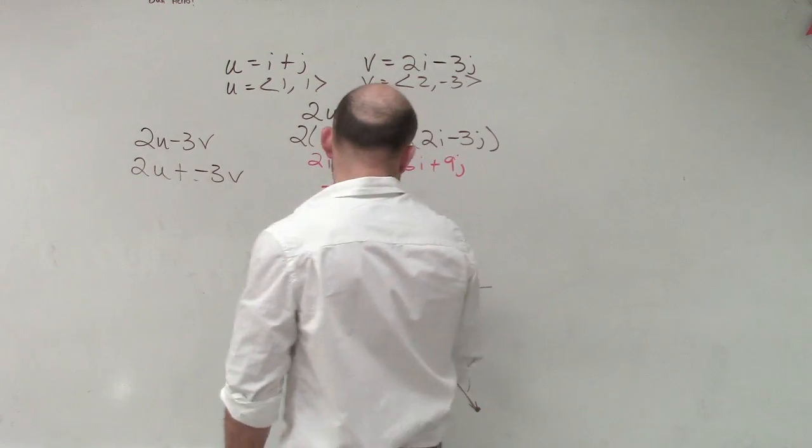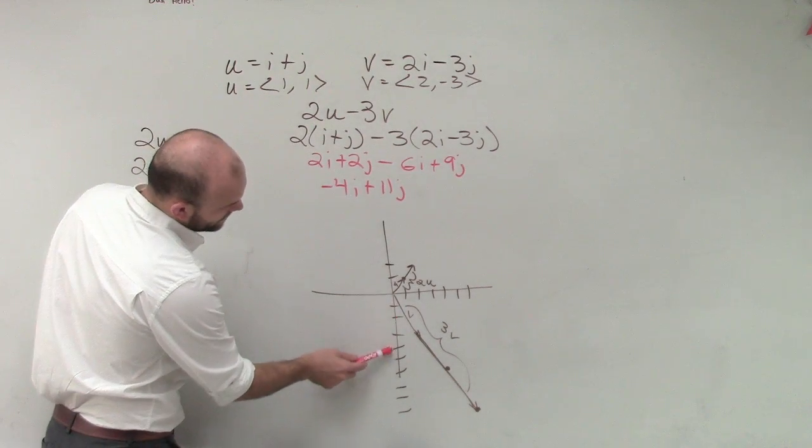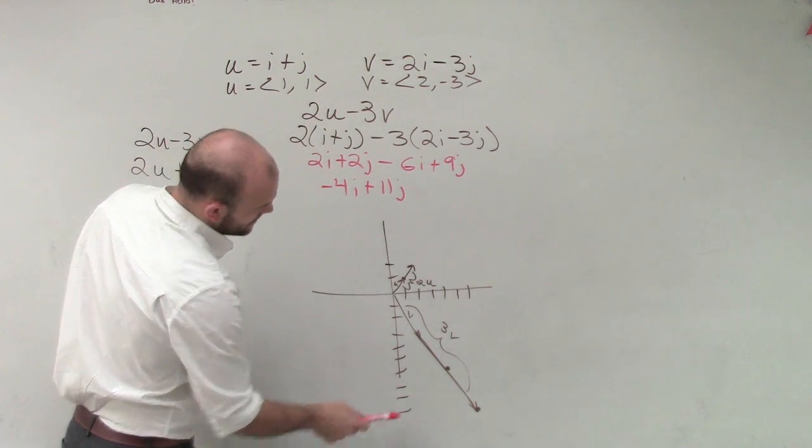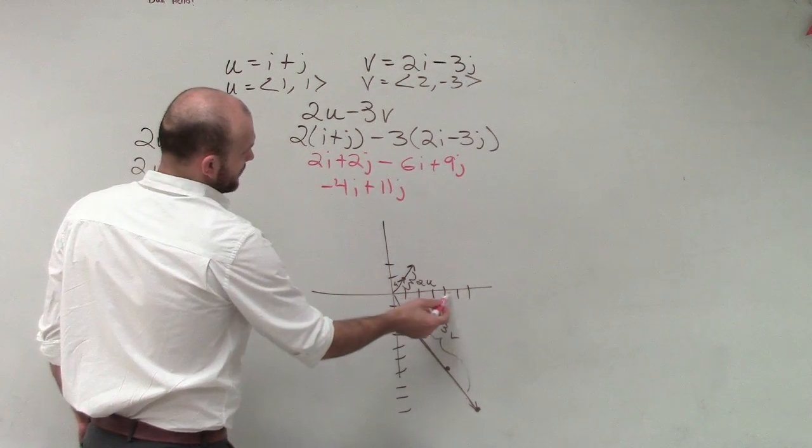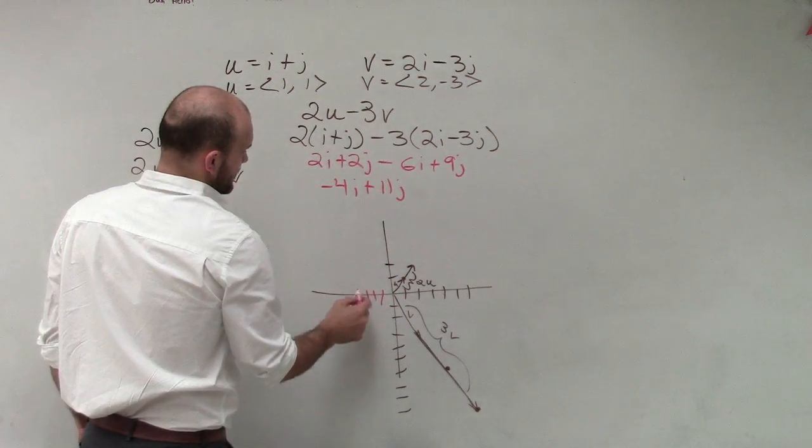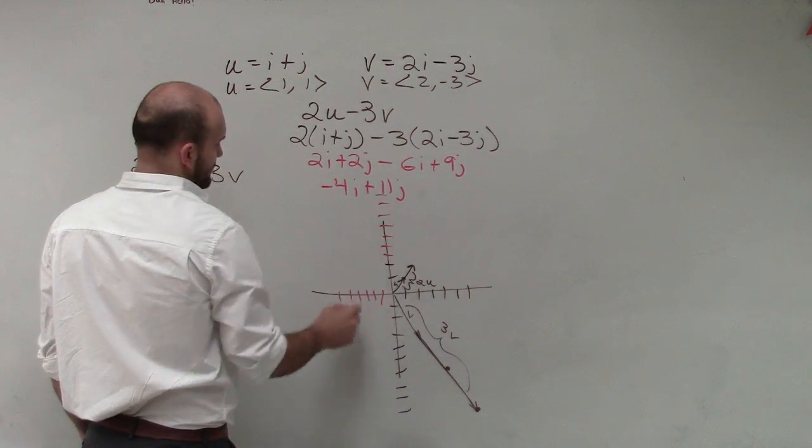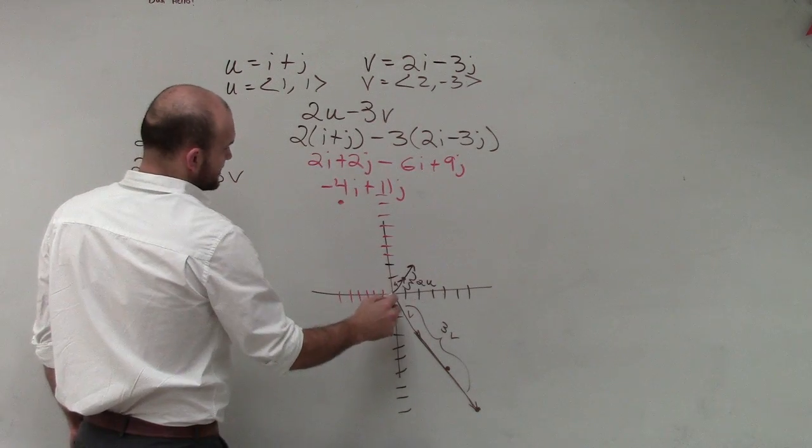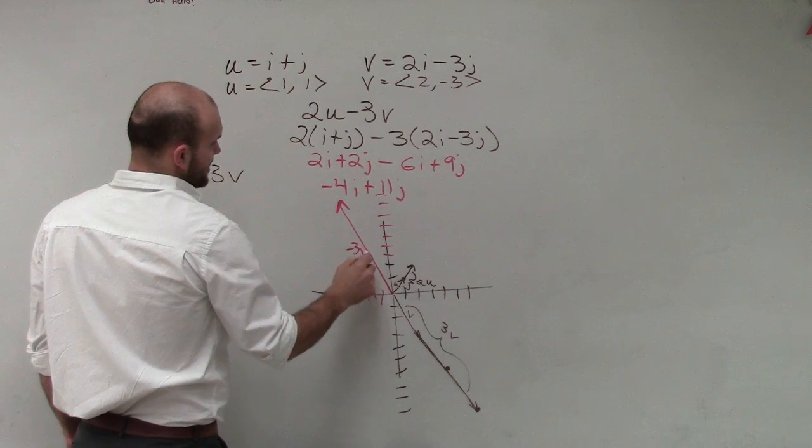So this is over 6, down 9. So 1, 2, 3, 4, 5, 6. Up 9. 1, 2, 3, 4, 5, 6, 7, 8, 9. So this vector is negative 3v.